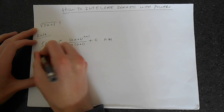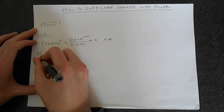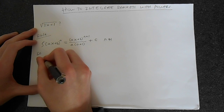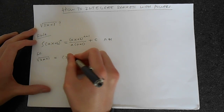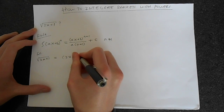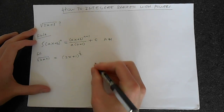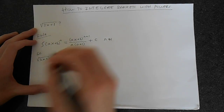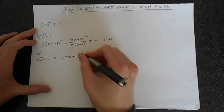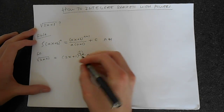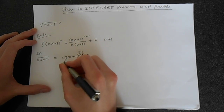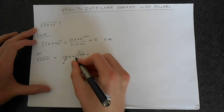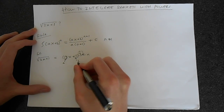So let's look at our example. We've got the square root of 2x plus 1, which is equal to 2x plus 1 raised to the power of one half. Let's match this up with the formula — n is one half, a is 2, and b is 1.